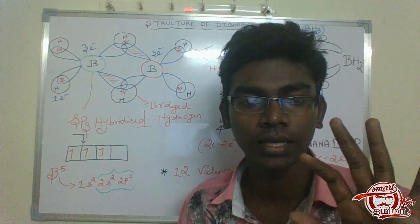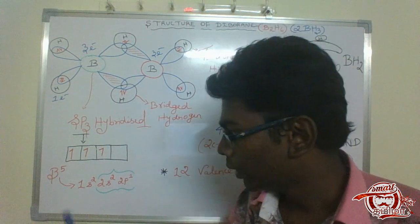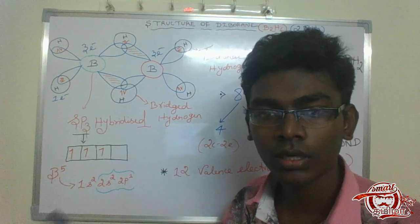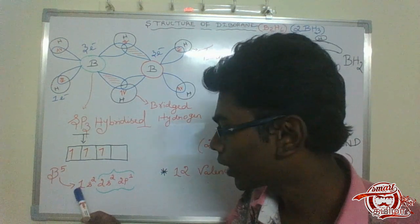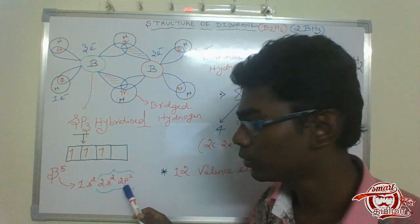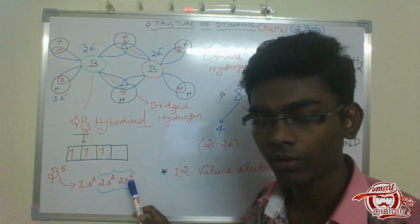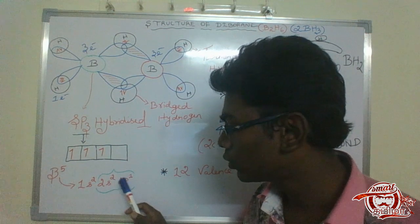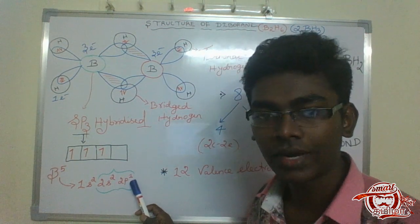The atomic number is 5. So Boron: the electronic configuration is 1s2, 2s2, 2p1. The 2s2, 2p1 is the valence configuration of Boron.